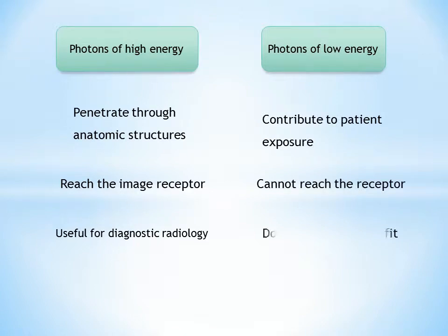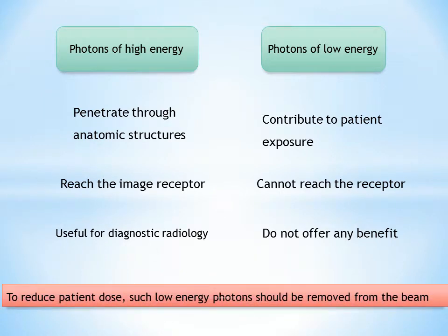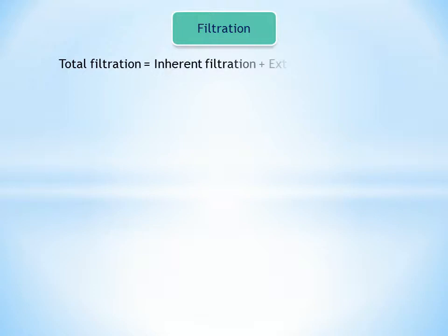Whereas the photons of low energy contribute to patient exposure but they cannot reach the receptor and do not offer any benefit. Thus, to reduce patient dose, such low energy photons should be removed from the beam. This can be accomplished in part by placing an aluminum filter in the path of the beam. An aluminum filter preferentially removes many of the low energy photons with lesser effect on the high energy photons that are able to contribute to making an image.